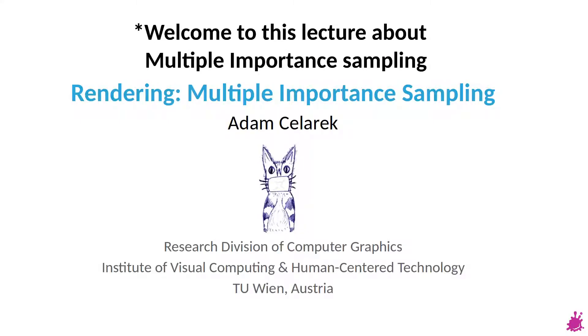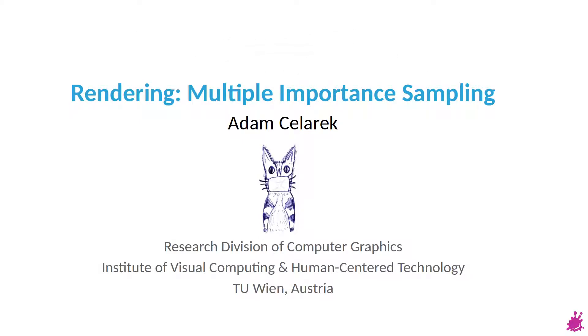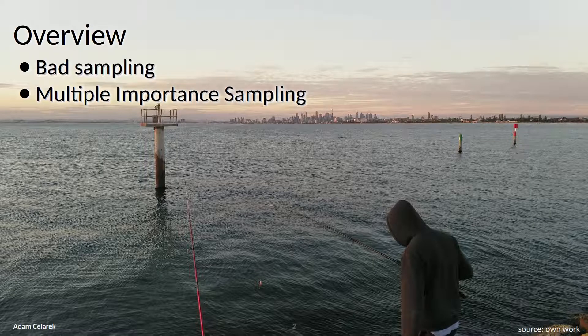Hello and welcome to the second part of the lecture about Monte Carlo integration. My name is Adam Celerik. As always let's start with an overview. First we will talk about bad sampling, that is when a certain sampling strategy produces a lot of variance in the result. In a rendering this is then visible as noise. After that we will look into multiple importance sampling. This is a method to combine several sampling strategies in order to reduce this variance.